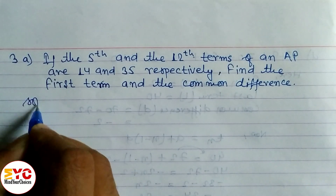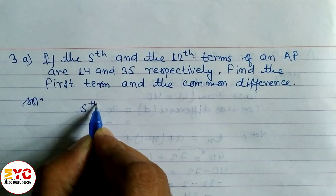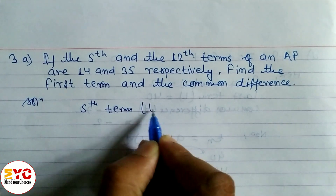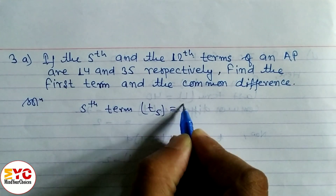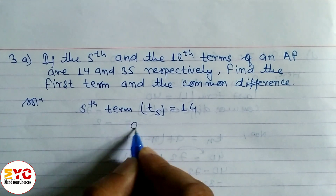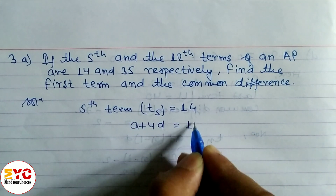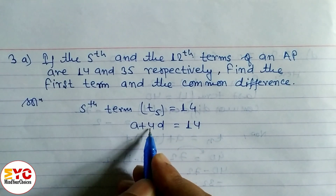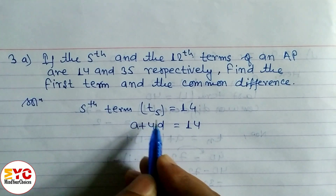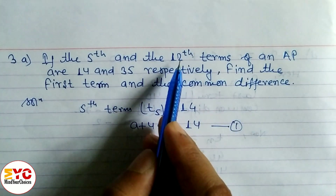Let's take a start here. The 5th term is 14, so we can write T5 is equal to 14. The formula of T5: A plus 4D is equal to 14. Because the formula is A plus (N minus 1)D, and if N is 5, then 5 minus 1 gives 4. So we write A plus 4D equals 14. This is equation 1.